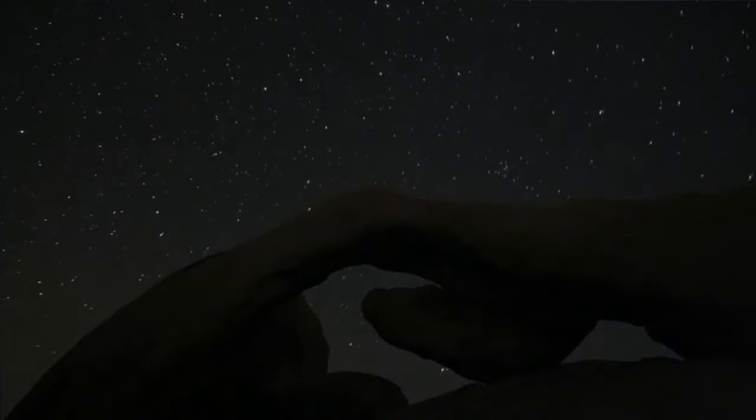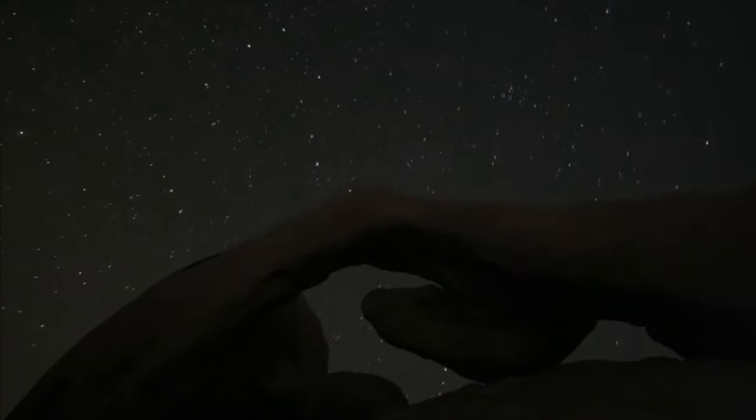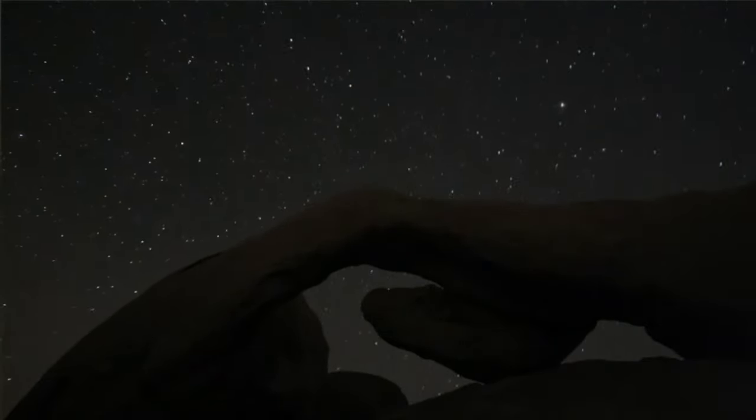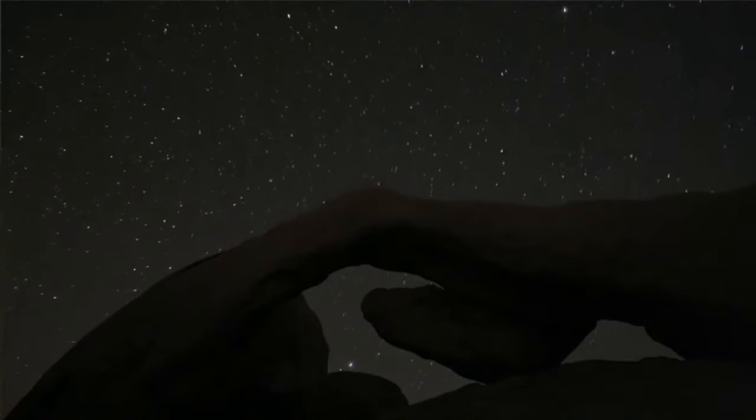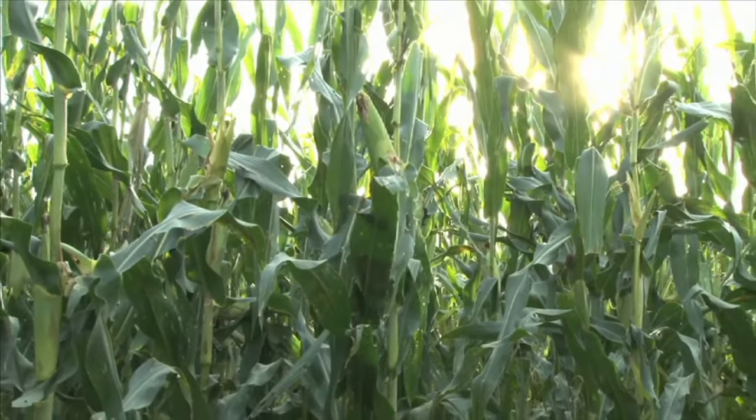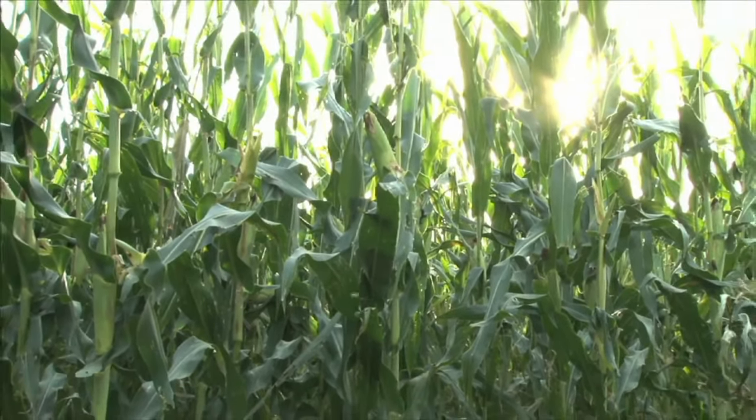For thousands of years, people have used the stars and the constellations for navigating at night and keeping track of the seasons. Farmers planted their crops according to which constellations were visible in the sky at night.